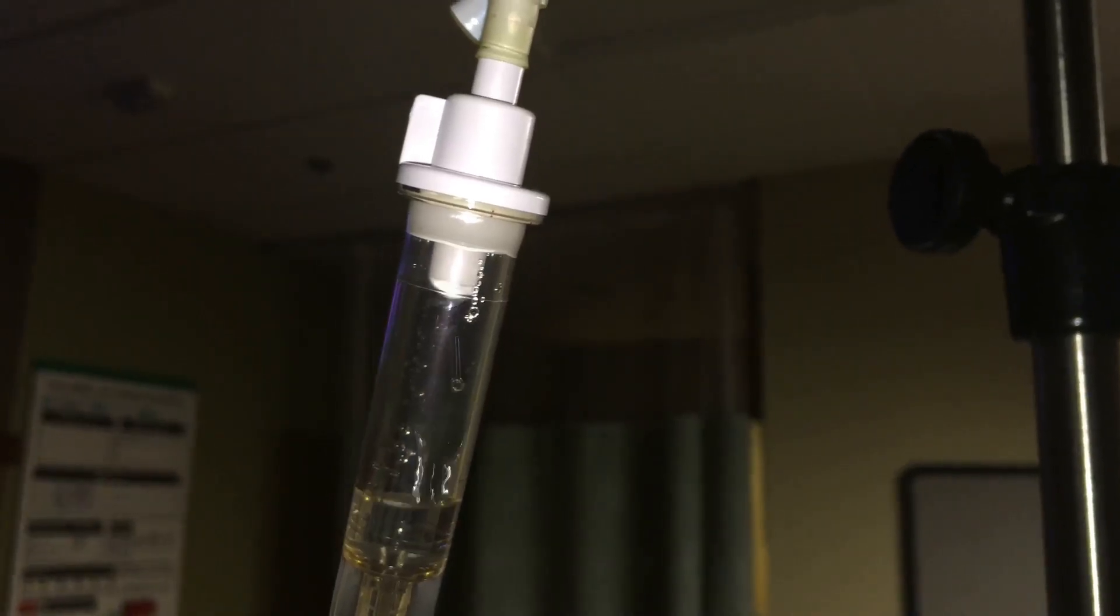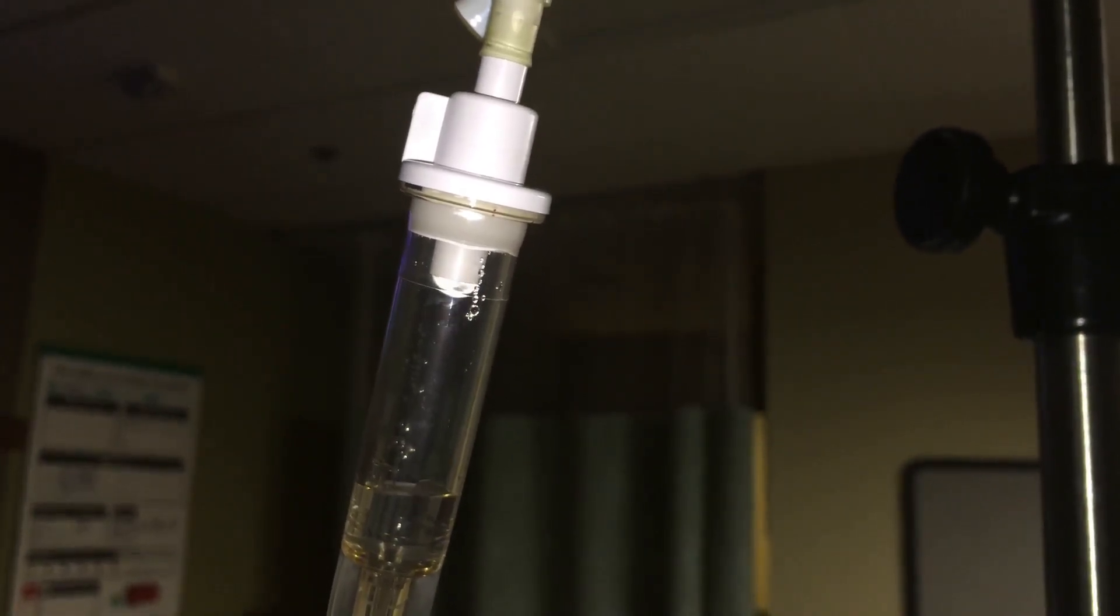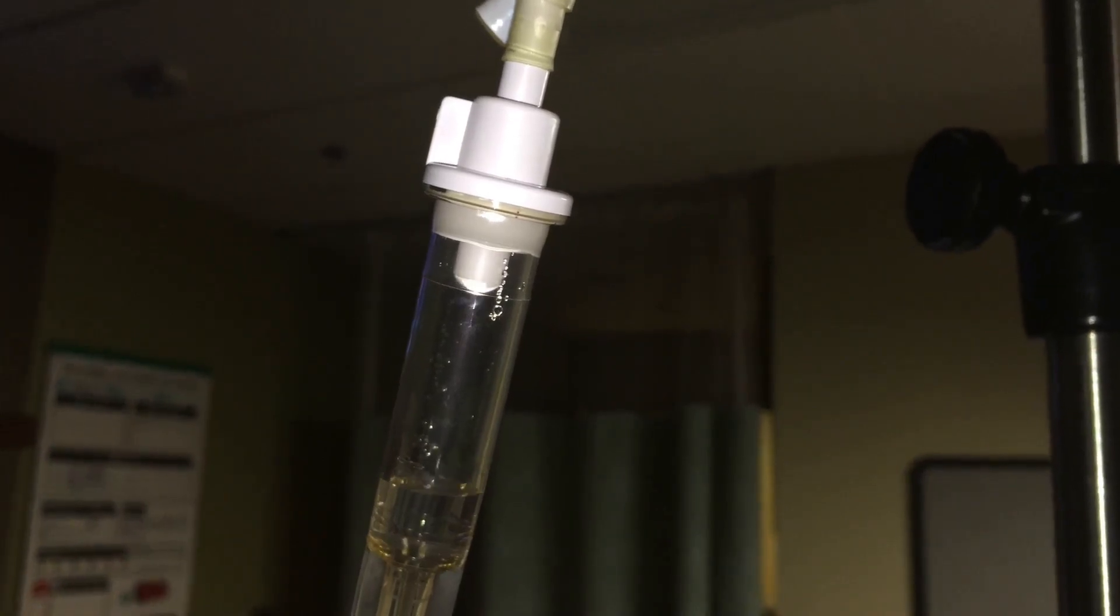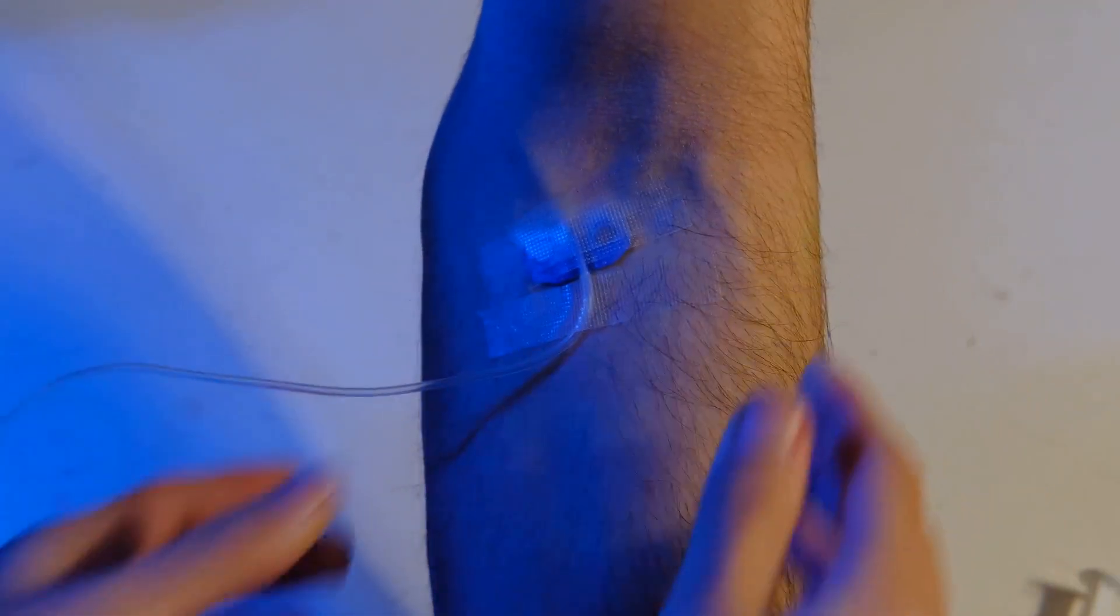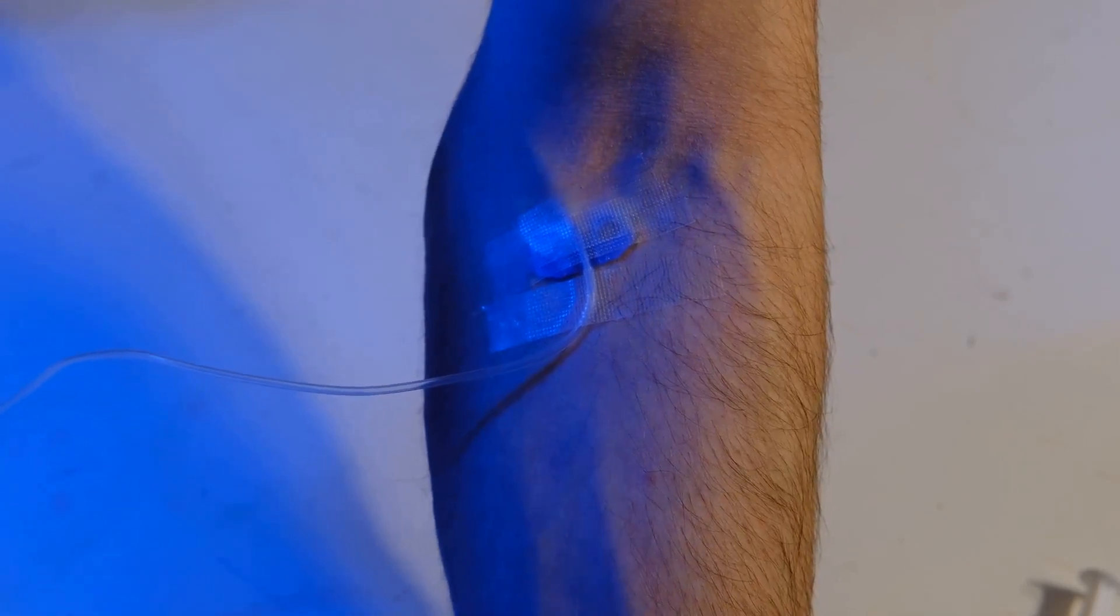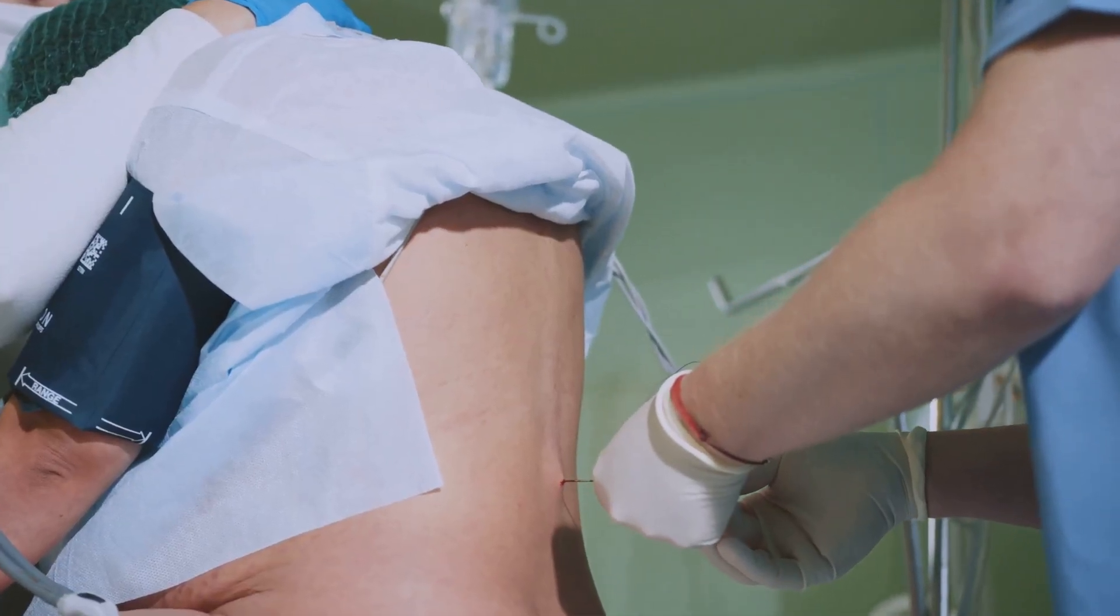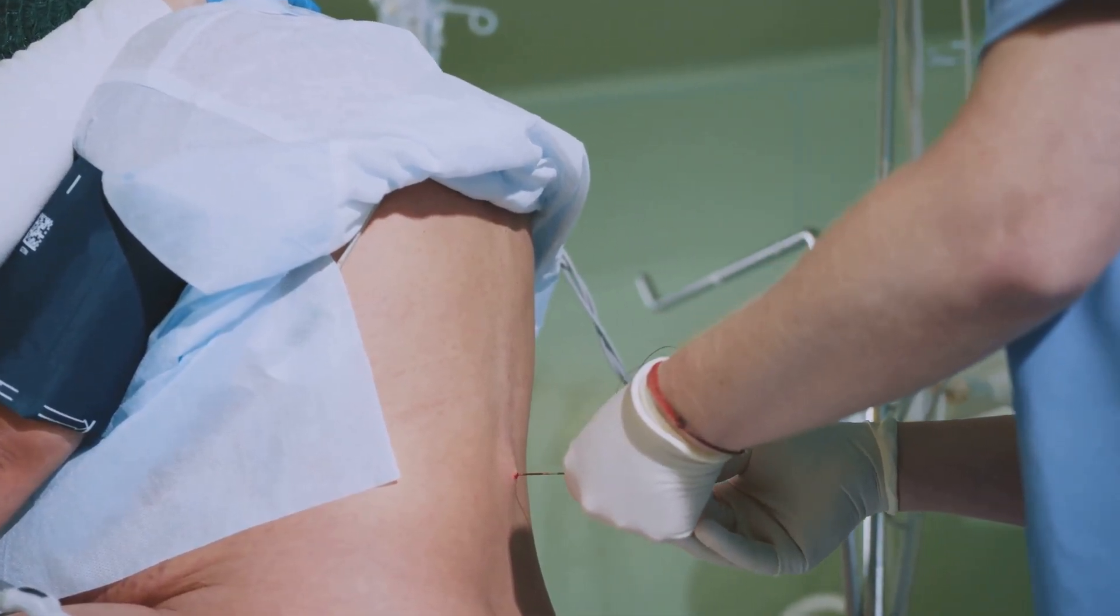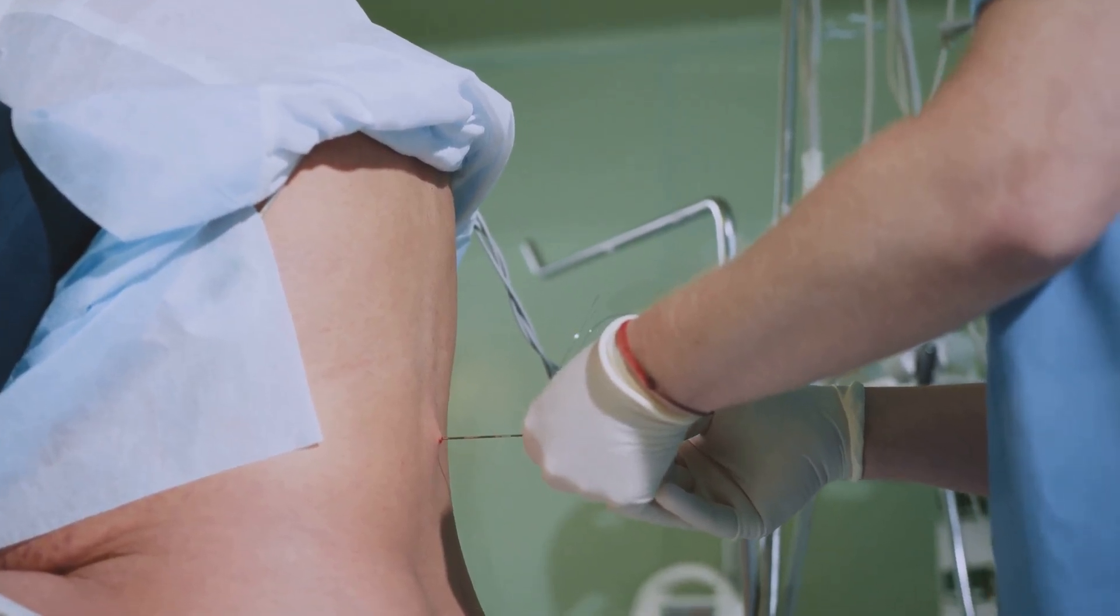Infiltration occurs when the cannula tip comes out of the vein and fluid leaks into the surrounding tissue, which can be uncomfortable and even harmful if not addressed quickly. You'll notice swelling, coolness and discomfort at the site. The area may also look pale or feel firm to the touch, and the patient might report a stinging sensation. Stop the infusion immediately. Remove the cannula and apply a warm compress to help the body absorb the leaked fluid and reduce discomfort.